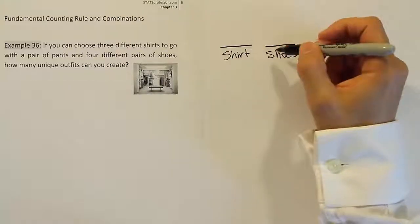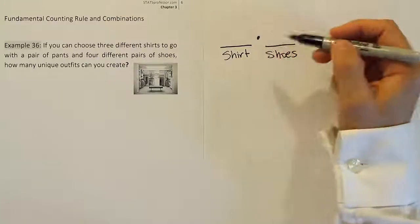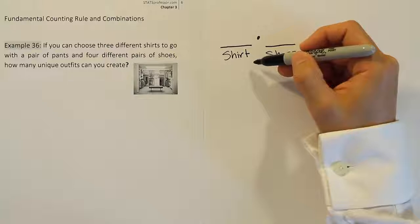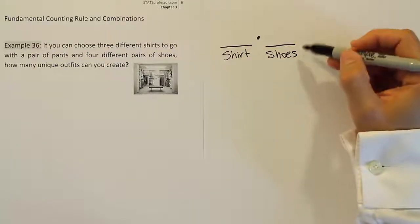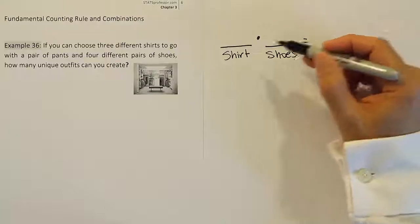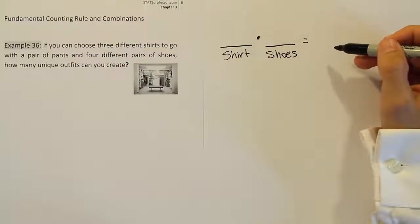The fundamental counting rule says that we should multiply the number of options you have for picking the shirt along with the number of options you have for picking the shoes. If you multiply those two things together, you will get the total number of possible outfits that can be created.